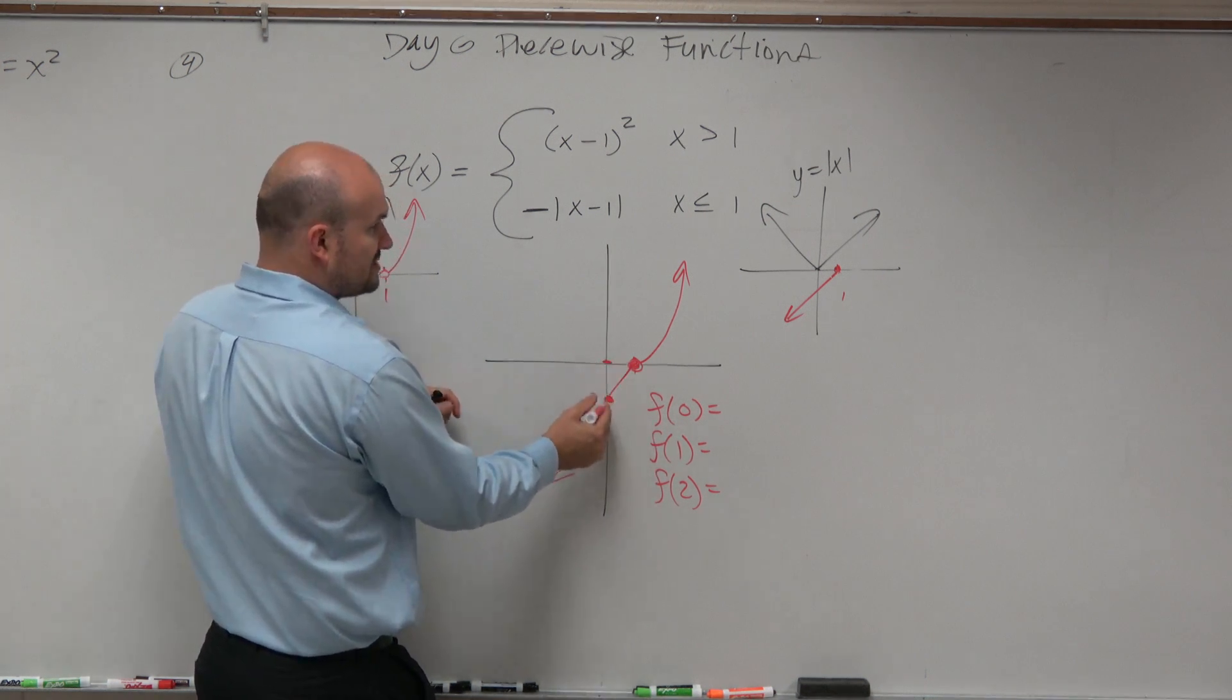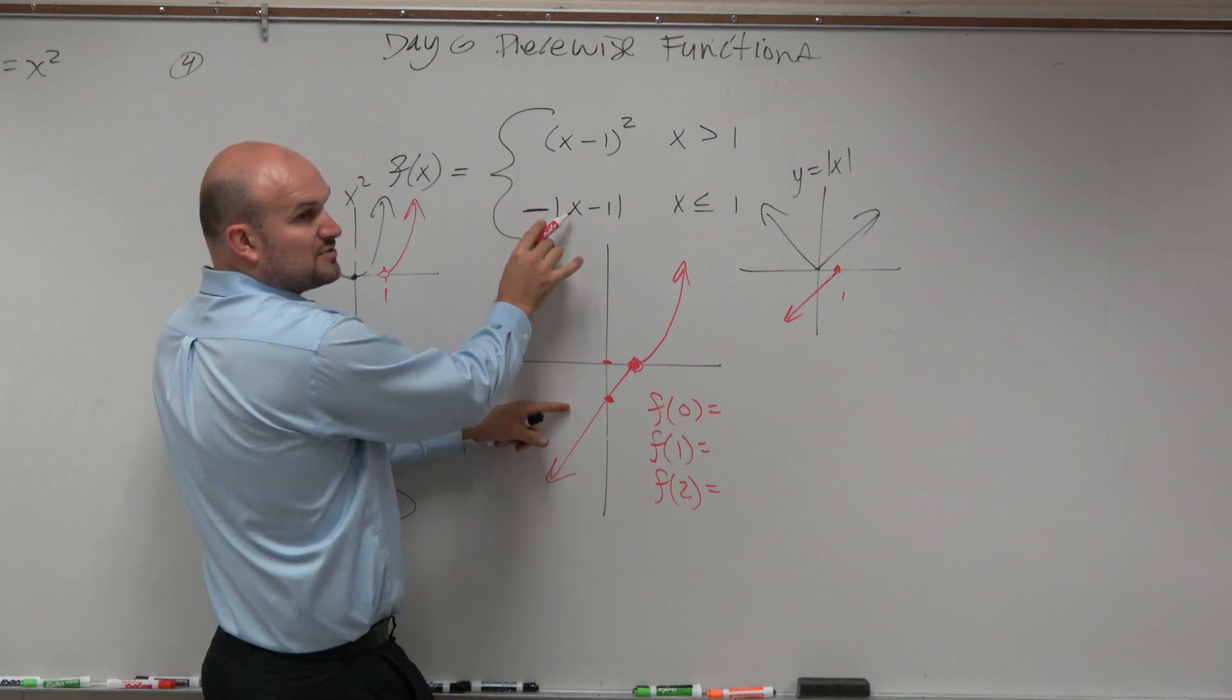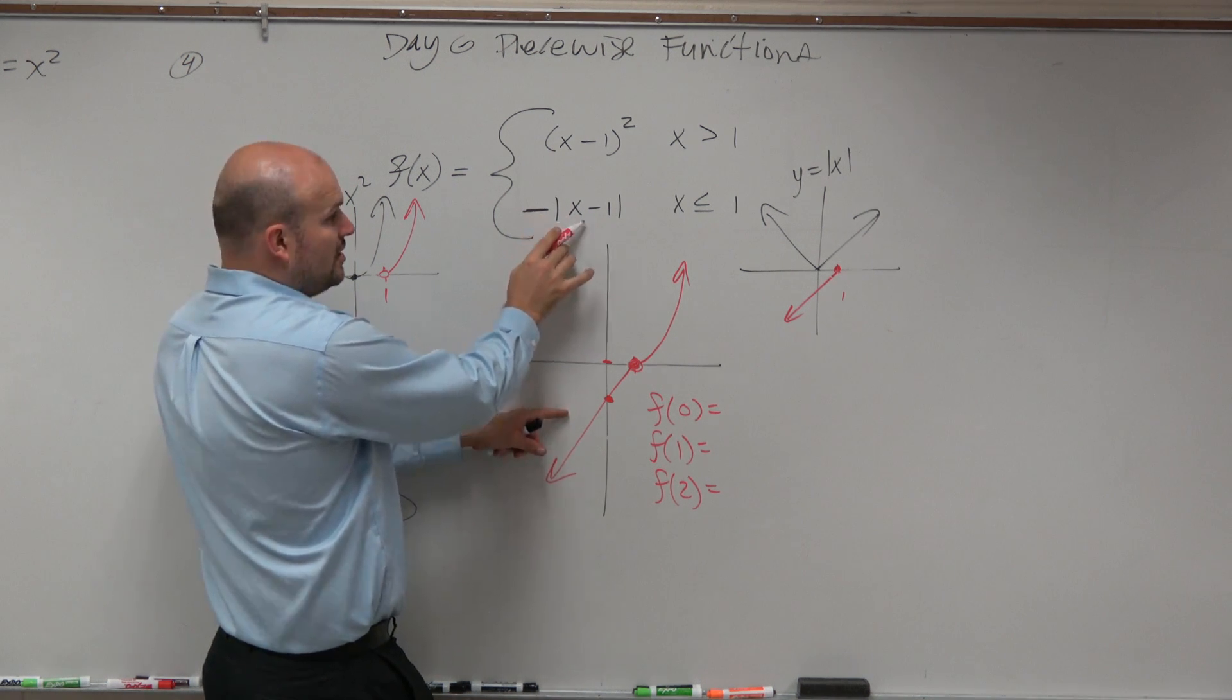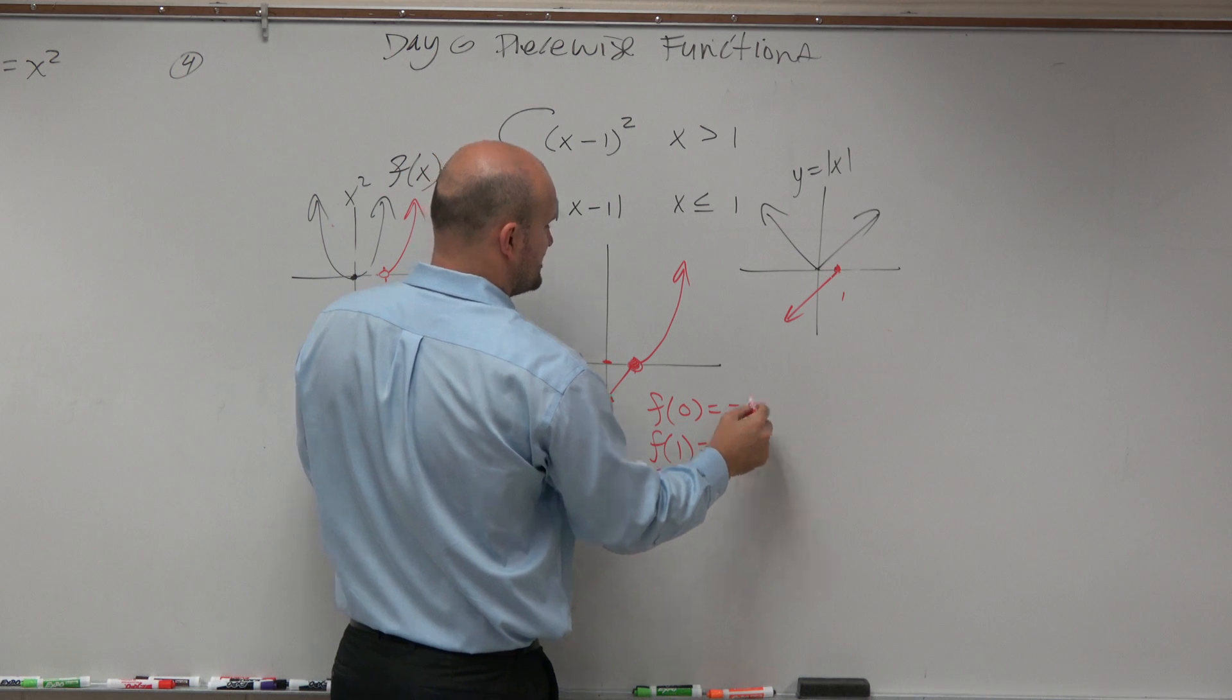Yes, at 0, we have this point. So you plug 0 in for there. 0 minus 1 is negative 1. Absolute value of negative 1 is 1. 1 times negative 1 is negative 1.